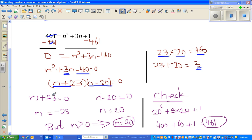So I'm setting this equal to zero. When N plus 23 is zero, N has to be negative 23. And when you set this equal to zero, that is N minus 20 equal to zero, N has to be 20.